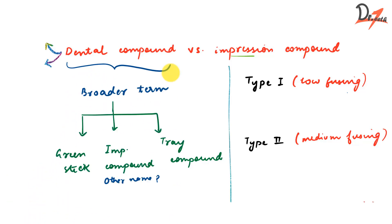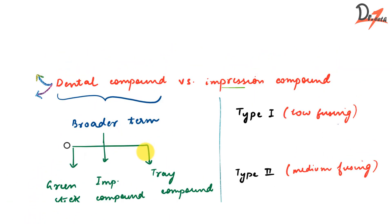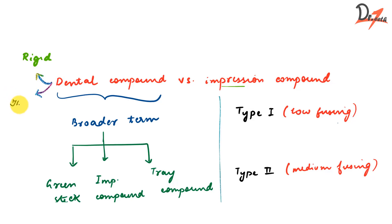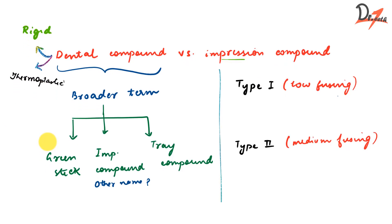Dental compound is a rigid impression material, or a group of impression materials, because it is a broader term with three types. All of these are thermoplastic - when you heat them they become soft, and when cooled they become hard. Their softness varies: some have more flow, some have less, and some have the least flow.